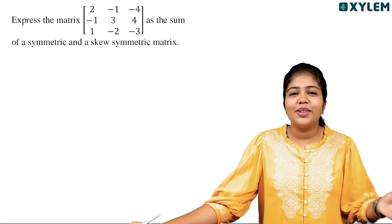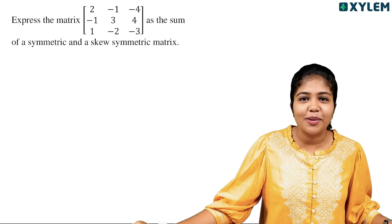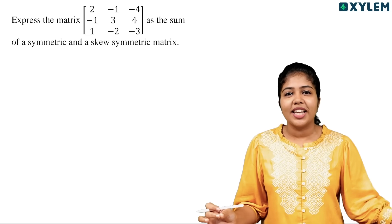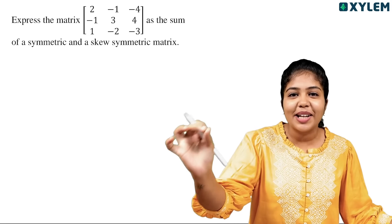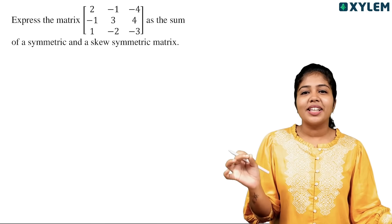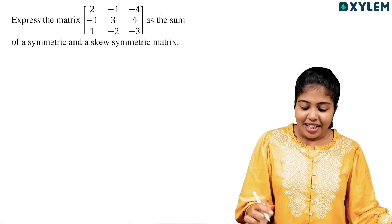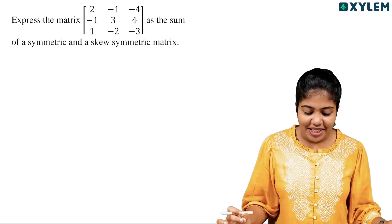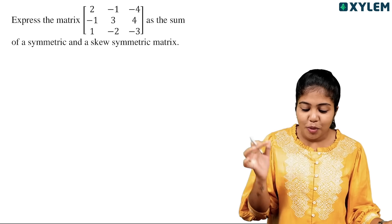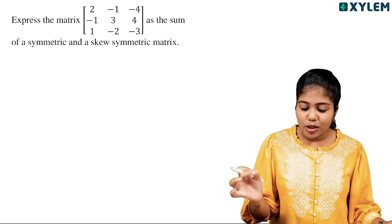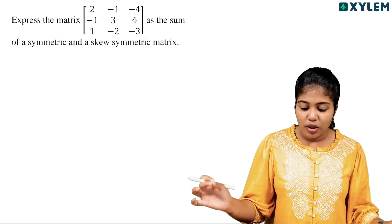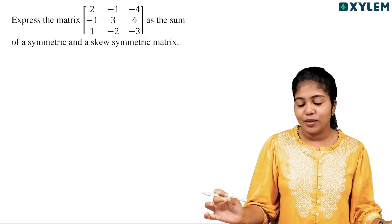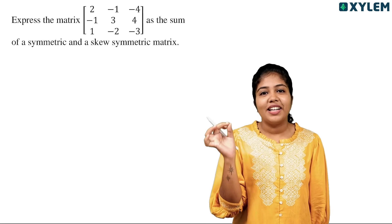Now we are going to study a 4-mark problem. Express the matrix [2, -1, -4; 1, -1, -3, -4; 1, -2, -3] as a sum of symmetric and skew-symmetric matrix.